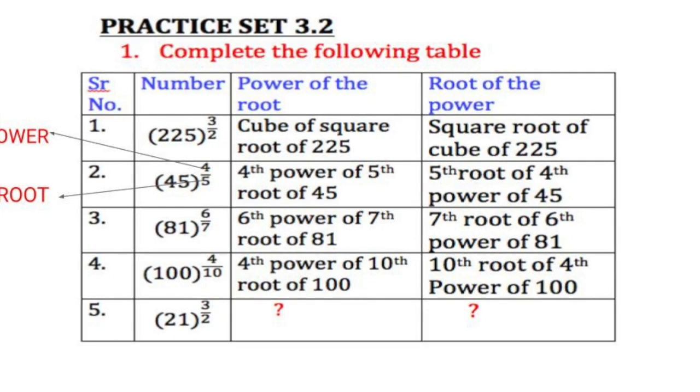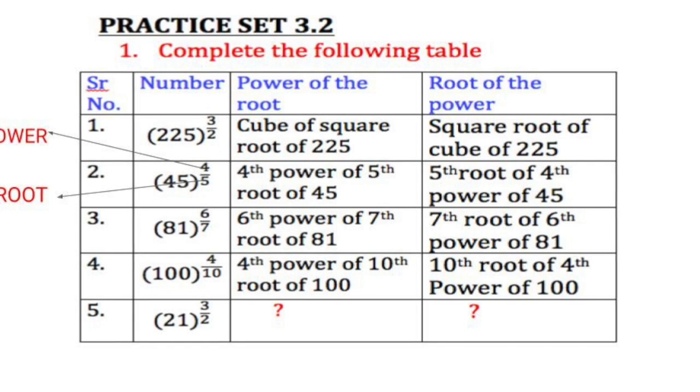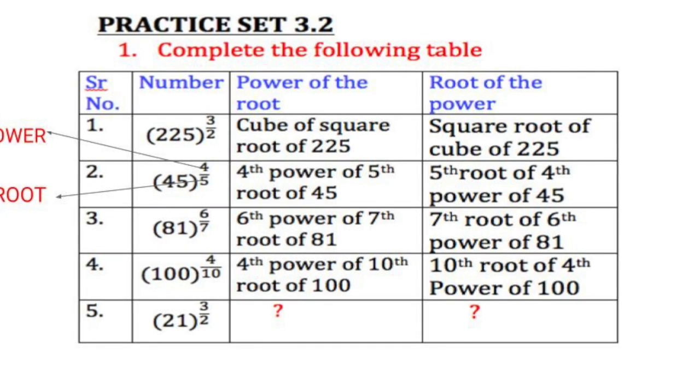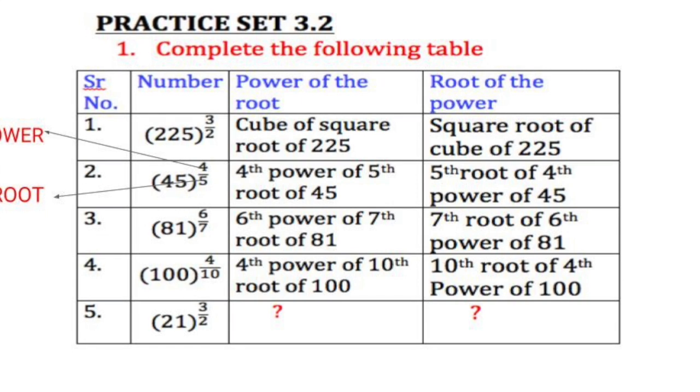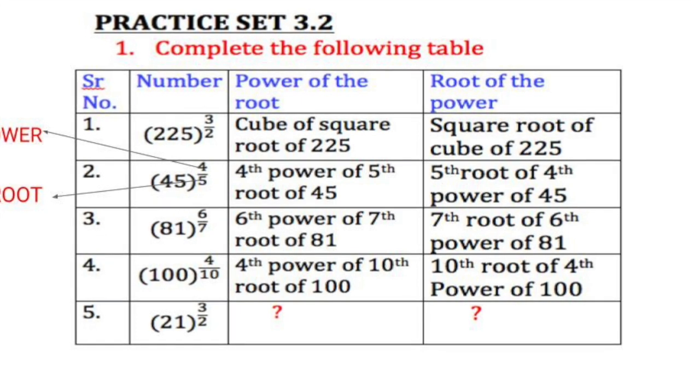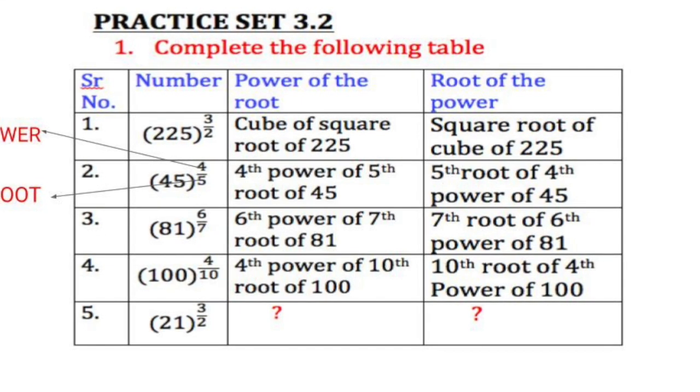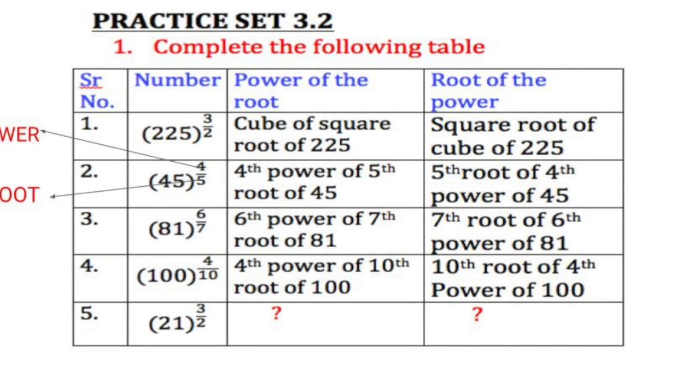81 raised to 6 upon 7. Now again it's the power form first. So you have the numerator first. So it becomes 6th power of 7th root of 81. And when you write the root of the power so that time the denominator comes first. So 7th root of 6th power of 81.